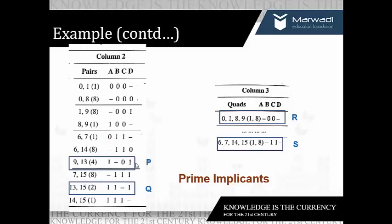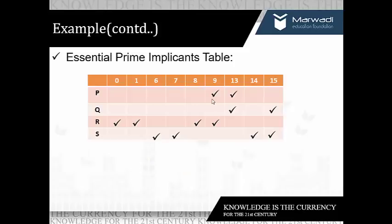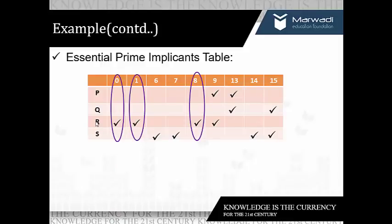The next step is to prepare the prime implicant table. The minterms corresponding to P are 9 and 13, those corresponding to Q are 13 and 15, and so on. We place a tick in front of those minterms — P covers 9 and 13, Q covers 13 and 15. On observing the entire table, minterm 0 can only be covered by R, minterm 1 can only be covered by R, and minterm 8 can only be covered by R. That is why R is called an essential prime implicant.